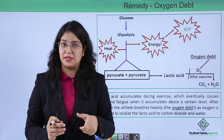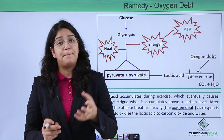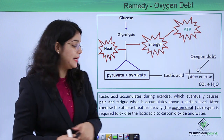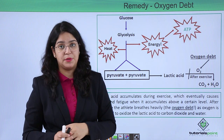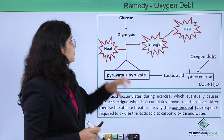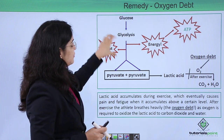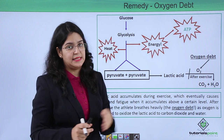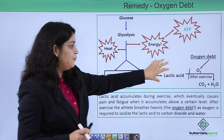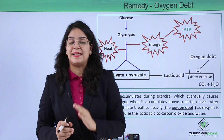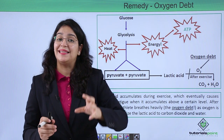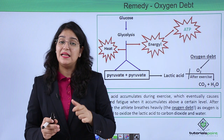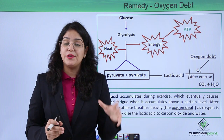We have learned how lactic acid accumulates in our muscles and how it makes us feel pain or fatigue. The next very important term is oxygen debt. This occurs when glucose is converted by glycolysis into lactic acid during exercise.